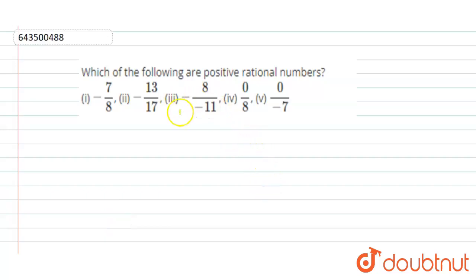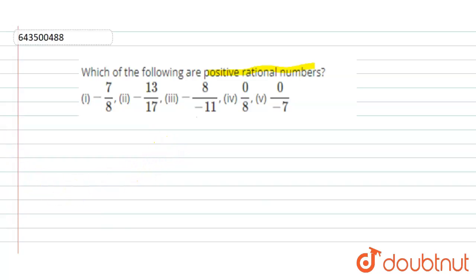Hello everyone. Our question is: which of the following are the positive rational numbers? A few rational numbers are given to us and we need to identify which ones are positive and which ones are negative.